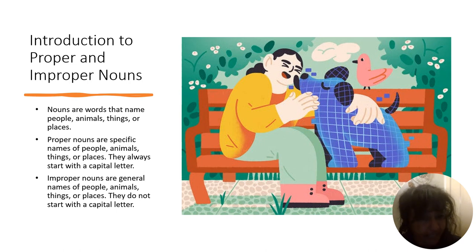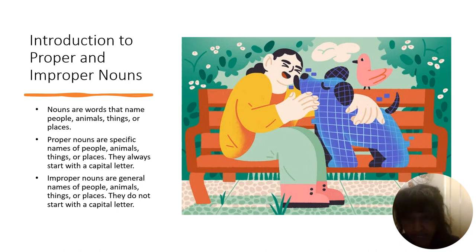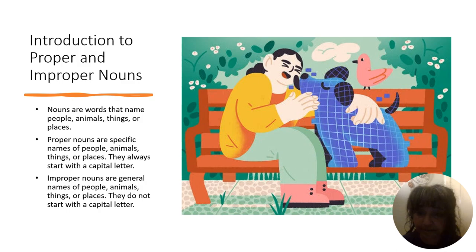Now, improper nouns are general names of people, things, animals, or places. So they do not start with a capital letter.